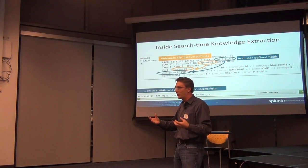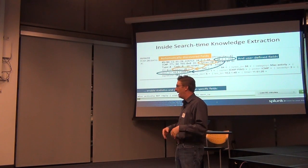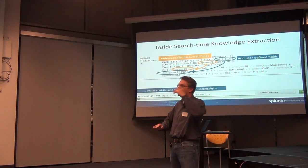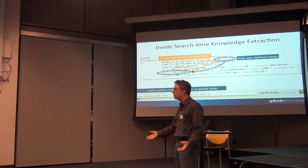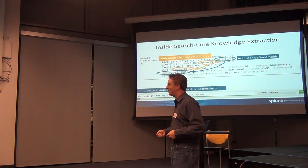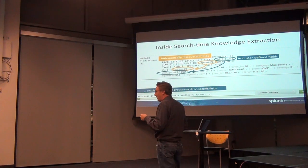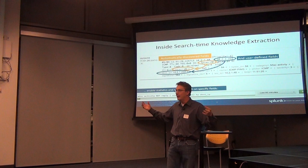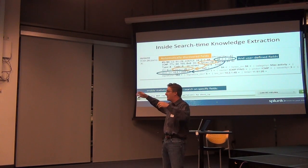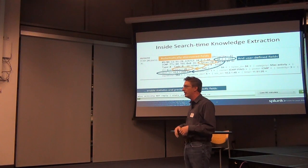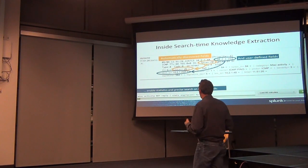If you have a rigid schema in a database and you want to add one more field, you need to do a table alter and manage all your schema across environments. We don't do that. We have what we call schema on query — the ability to look at structure entirely at query time. It's full text search: you go in, start searching, and get your structure back.